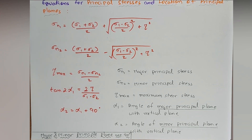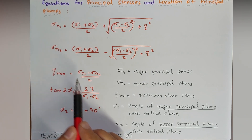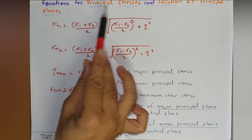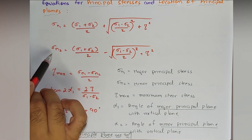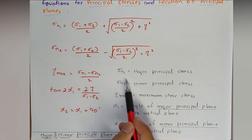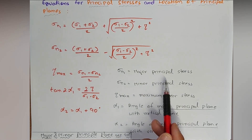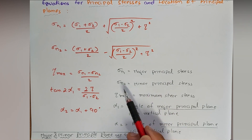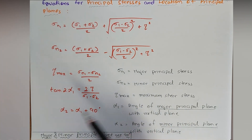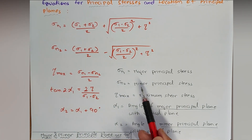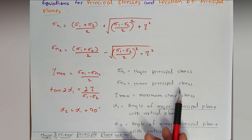For this we have the formulas σn1 and σn2 for the calculation of principal stresses. σn1 is the major principal stress — that is the plane which carries the maximum stress — and σn2 is the minor principal stress, which is the principal plane that carries the minimum stress.